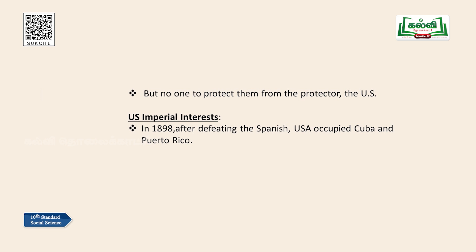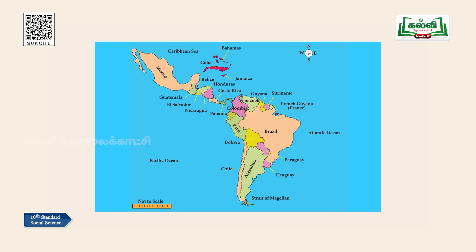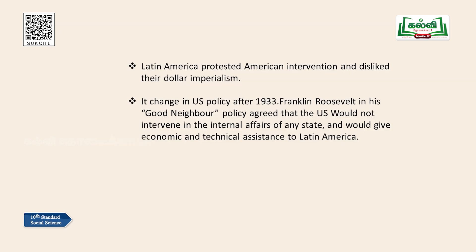US Imperial Interest: In 1898, after defeating Spain, the United States occupied Cuba and Puerto Rico. From 1898 to 1902, Cuba was under US military rule, and the USA retained its right to intervene in Cuban internal affairs. President Theodore Roosevelt's attitude to Latin America was dominant — not only politically but also economically. Dollar imperialism is the term used to describe the policy of the USA in maintaining and dominating over distant lands through economic aid.